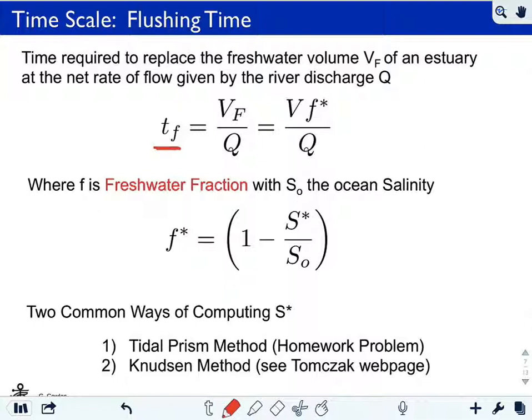TF is flushing time, and simply it's just the ratio. It's the time required to replace the volume of fresh water, and I'll define what that is in a second, the volume of fresh water in the estuary divided by the river discharge Q. So the units of the numerator are meter cubed, and the units of the denominator is meter cubed per second. So you have meter cubed over meter cubed per second, so this is of units time.